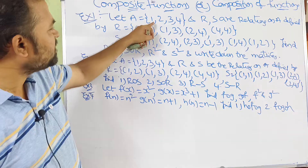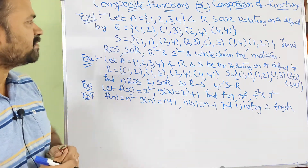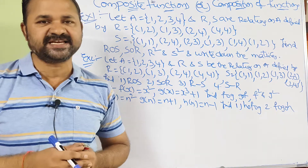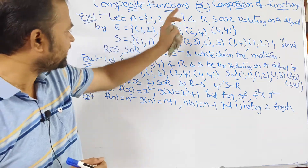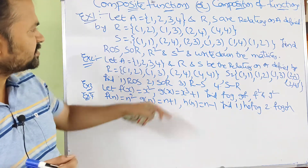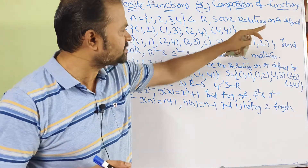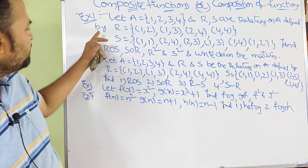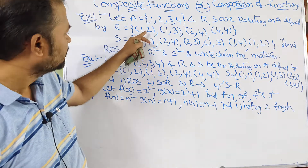Let A equal to {1, 2, 3, 4}. So here we have a set A. A contains four elements. And R, S are relations on A defined by R equal to the ordered pairs (1,2), (1,3), (2,4), (4,4).